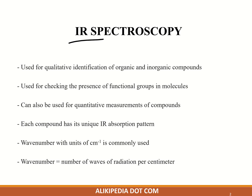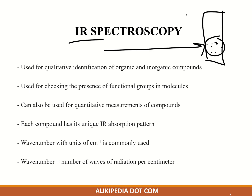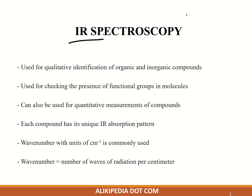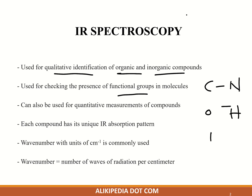IR spectroscopy deals with the IR region of the electromagnetic spectrum. IR spectroscopy is the analysis of IR light interacting with a molecule. IR light comes in, interacts with the molecule, absorption happens, and this can tell you about the qualitative identification of organic and inorganic compounds — used for checking the presence of functional groups like C, N, O, H, N-H, etc.